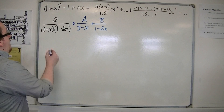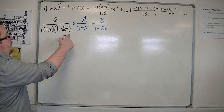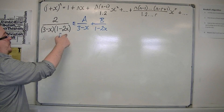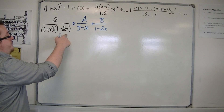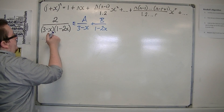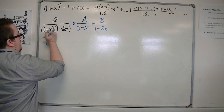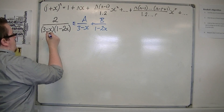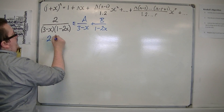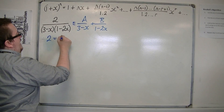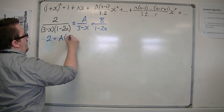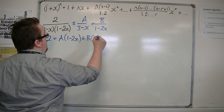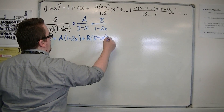The first thing to do is to multiply both sides by (3 minus x)(1 minus 2x), and I'm going to get 2 is equal to A lots of (1 minus 2x) plus B lots of (3 minus x).